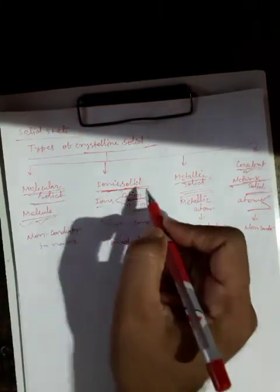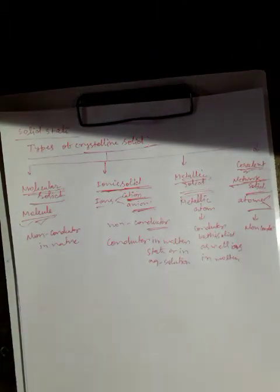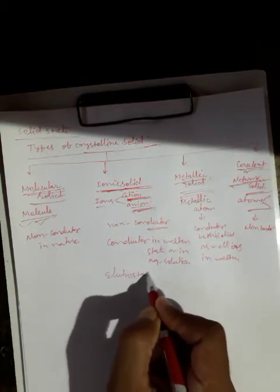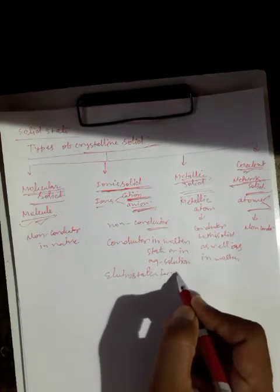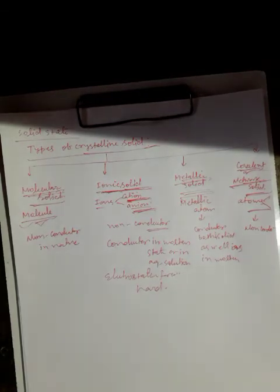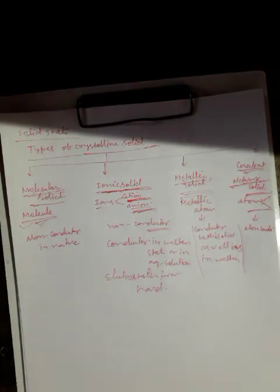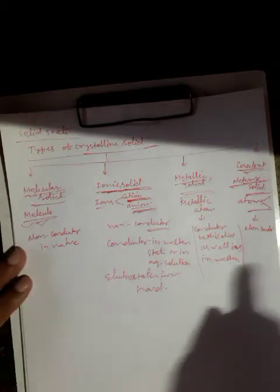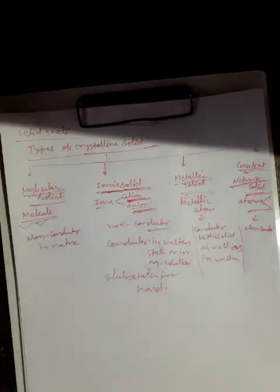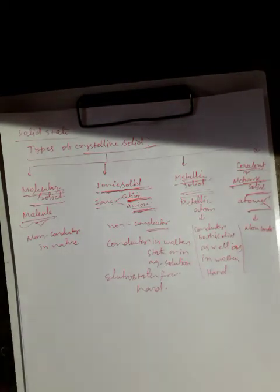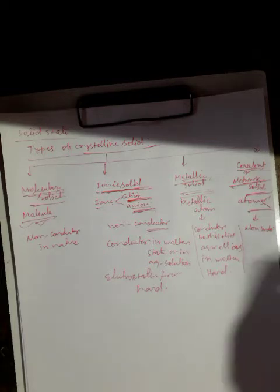In ionic solid, constituent particles are held together by very strong electrostatic force of attraction, so they are hard. Metallic solids are held together by very strong metallic bonding, which is also very strong, so they are hard as well, but they are malleable and ductile.